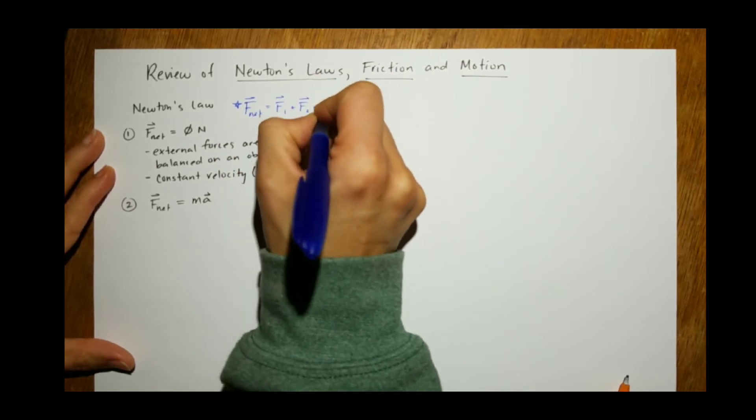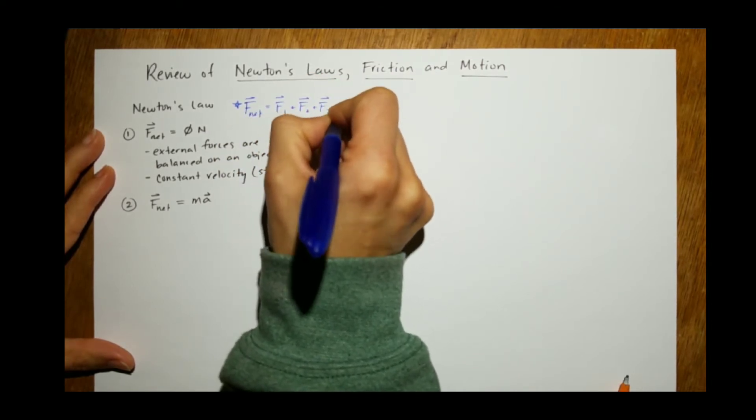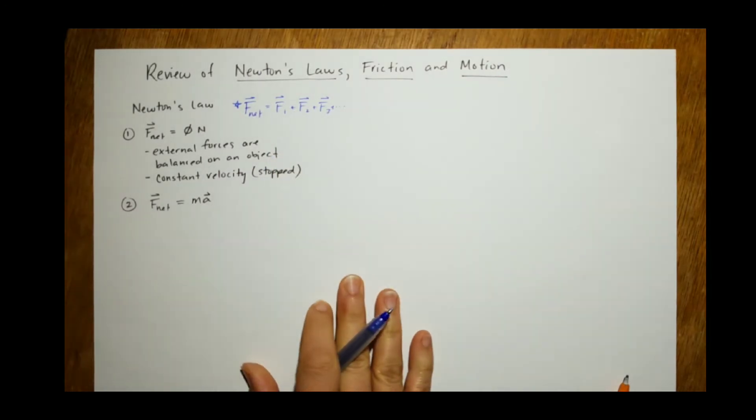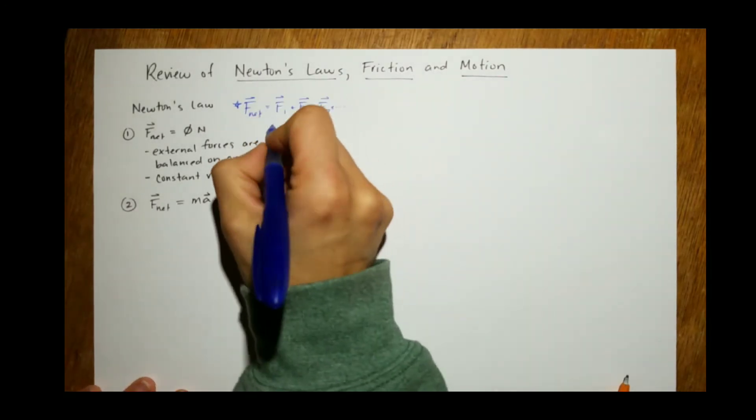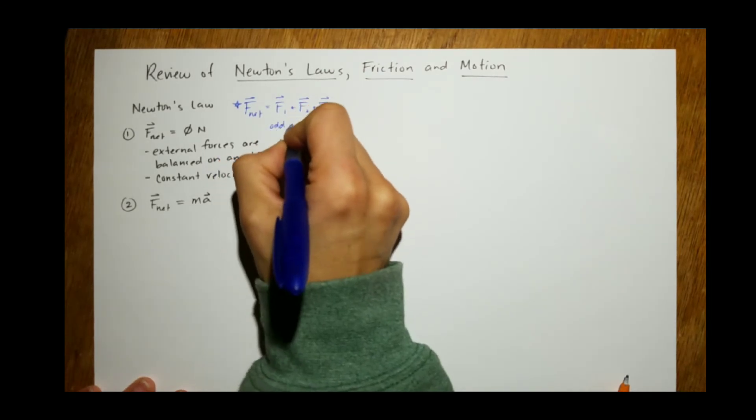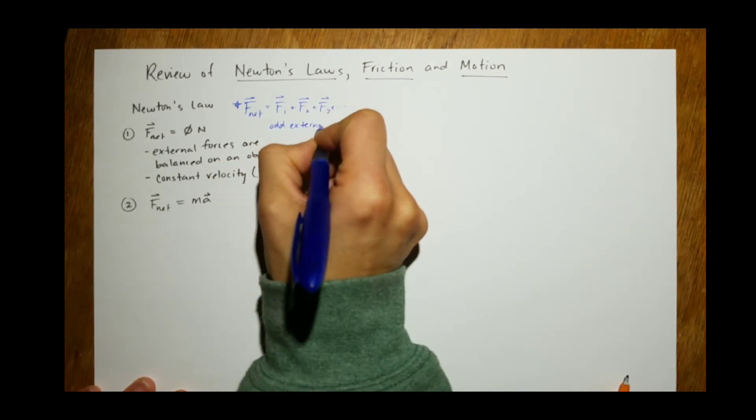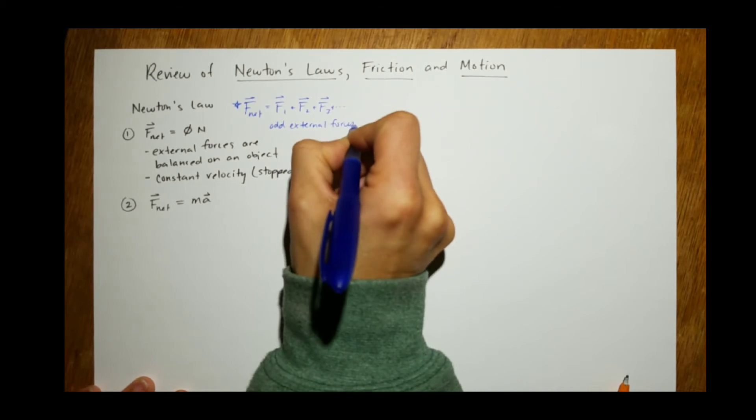And I guess we should talk about what F net is as well. Notice I always put vectors on these, and I always put dot, dot, dot, because I don't know how many there are in a question. So we add all the forces together.